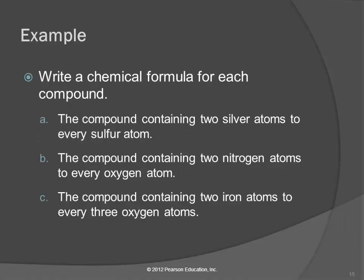So let's do this example, write a chemical formula for each compound. I'm losing my ability to read. Okay, a compound containing two silver atoms for every sulfur atom. Well, which one's going to come first? Silver or sulfur? Silver, because silver's a metal. What's the symbol for silver? Ag. Ag, and it says there's two of them, so subscript two and then sulfur and it says there's one of those, right? So that's the first one.